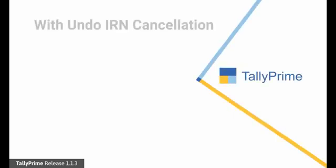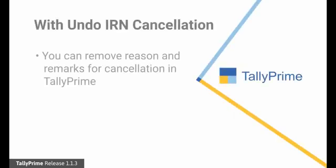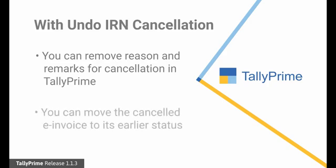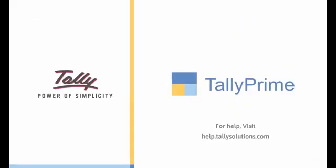As you saw, the Undo Cancellation feature is a simple facility using which you can remove the reason and remarks for cancellation in vouchers in Tally Prime. Furthermore, the status of the vouchers in the e-invoice report gets updated as the vouchers move to the respective sections to match their status in the e-invoice system. Thank you.